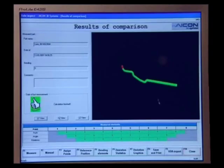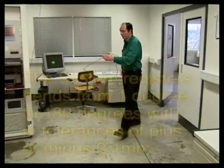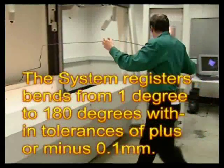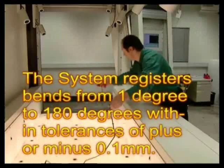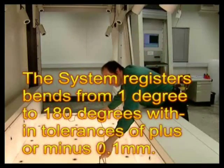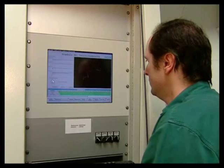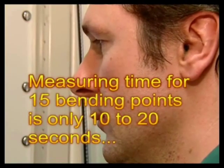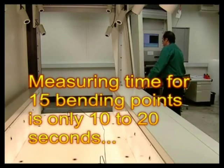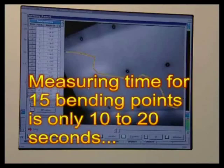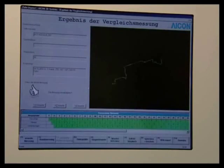The system registers bends from 1 degree to 180 degrees within tolerances of plus or minus 0.1 millimeter, and it does so quickly with user-independent results. The measuring time for a tube with 15 bending points is only 10 to 20 seconds. Try that the old way.